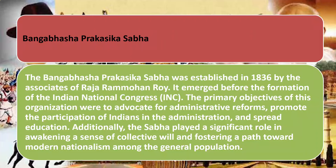The first society on our screen is Pangbhasha Prakashika Sabha, established in 1836. Important to note — it was not made by Raja Ram Mohan Roy himself, but by the associates of Raja Ram Mohan Roy. These are two distinct things. Its objectives were administrative reforms, promoting the participation of Indians in the administration, and spreading education.